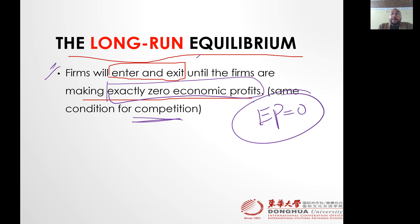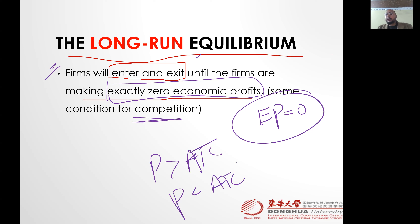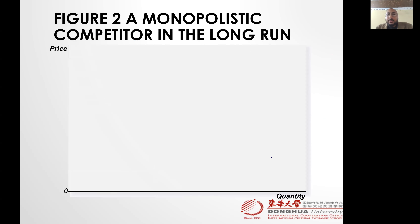The entry condition is: if price is greater than average total cost, firms will enter the market. The exit condition is: if price is less than average total cost, firms will exit the market. In the long run, price equals average total cost.